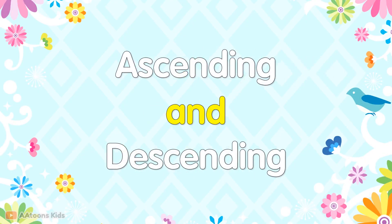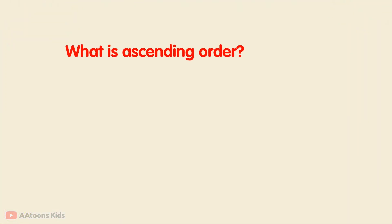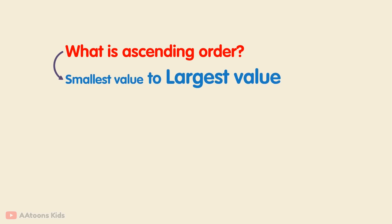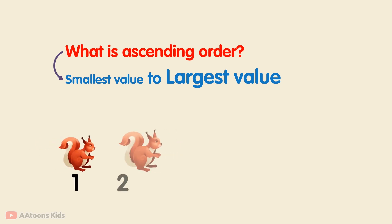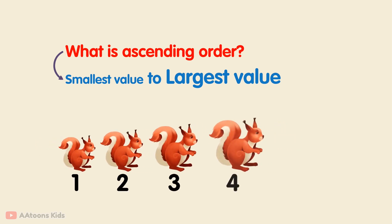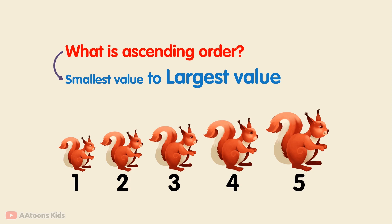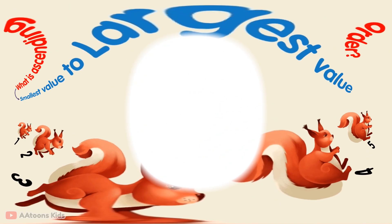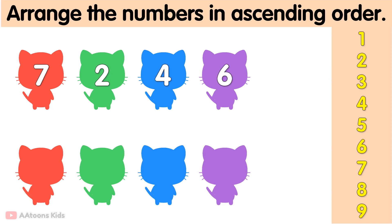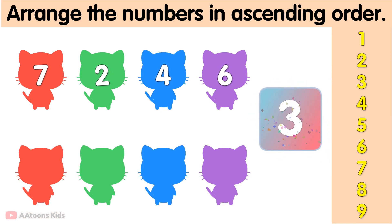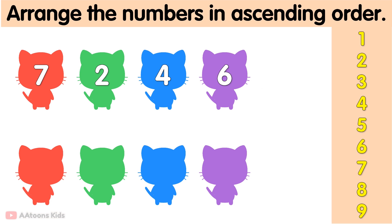Ascending and descending orders for kids. What is ascending order? In ascending order, numbers or items are arranged from the smallest value to the largest value, like 1, 2, 3, 4, 5, and so on. So in ascending order, the value is arranged from smallest to largest.